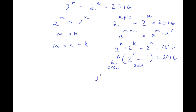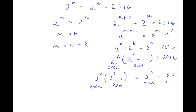So now this will equal 2 to the power of n times 2 to the power of k minus 1 — remember, 2 to the power of n is even, and 2 to the power of k minus 1 is odd. And this equals 2016, which I'm going to rewrite as 2 to the power of 5 — which is even — times 63, which is odd. 2 to the power of 5 is 32, and 32 times 63 equals 2016. So I simply rewrote 2016 as 2 to the power of 5 times 63.